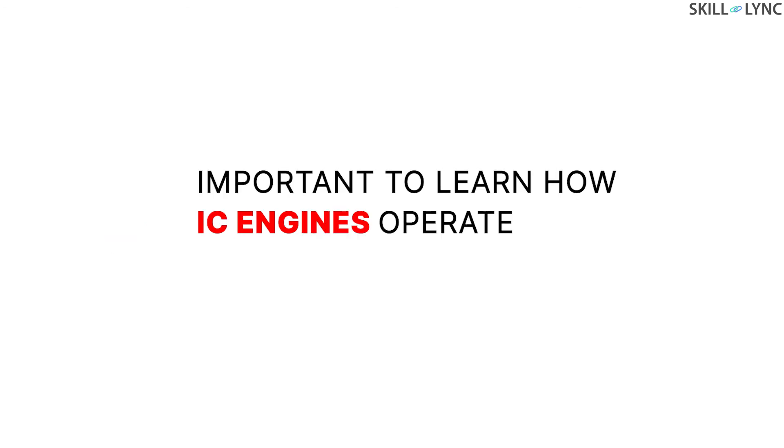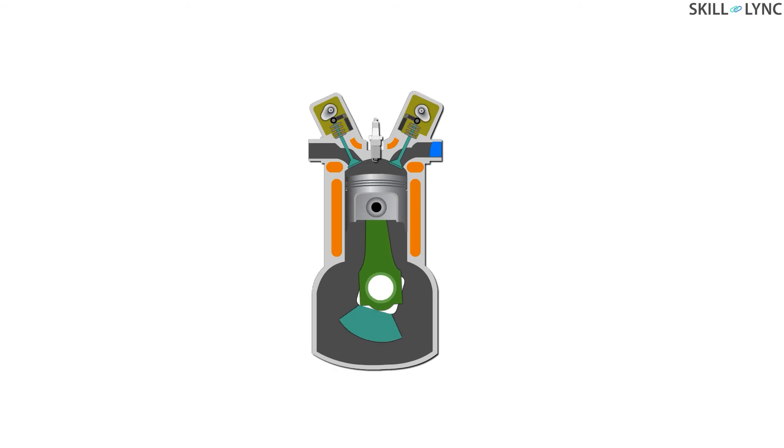We know that most of the vehicles today operate on IC engines and hence it is imperative for us to understand the operation of IC engines. Initially, the piston moves from top dead center to the bottom dead center. The inlet valve opens and the air or air fuel mixture is allowed to be sucked in the engine cylinder. The exhaust valve remains shut.